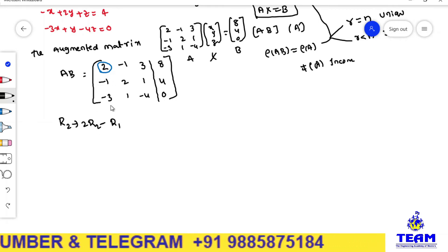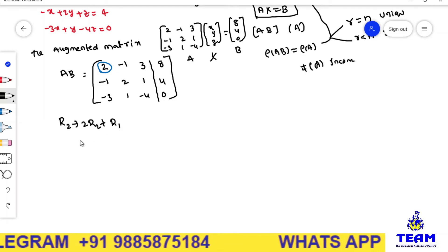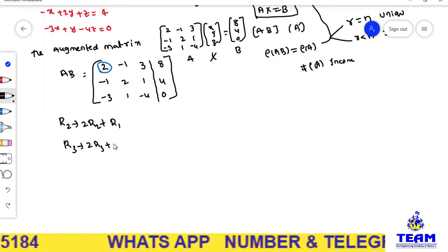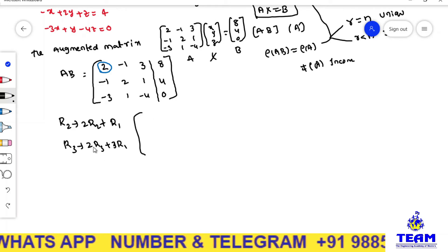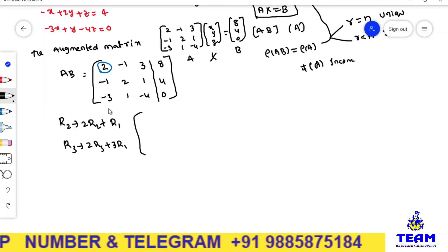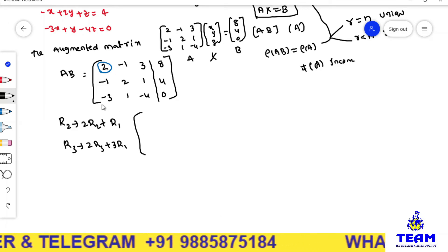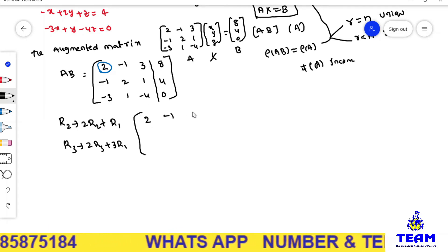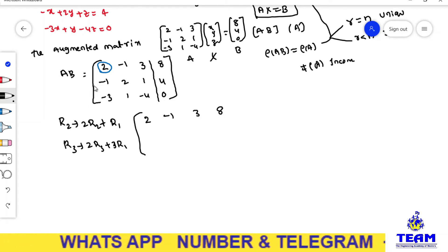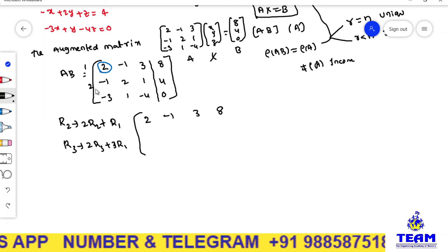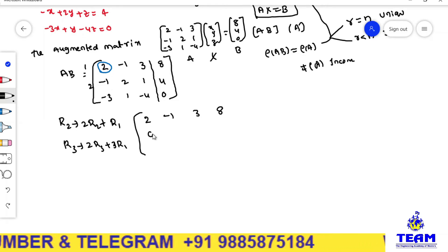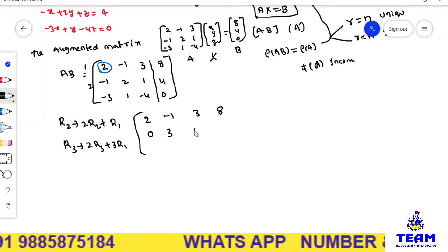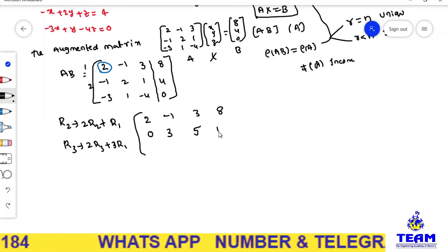Applying R2 → 2R2 + R1: the first row stays as 2, -1, 3, 8. For the second row: 2×(-1) + 2 = 0; 2×2 + (-1) = 3; 2×1 + 3 = 5; 2×4 + 8 = 16. So the second row becomes 0, 3, 5, 16. For R3 → 2R3 + 3R1: 2×(-3) + 3×2 = 0; 2×1 + 3×(-1) = -1; 2×(-4) + 3×3 = 1; 2×0 + 3×8 = 24. So row 3 becomes 0, -1, 1, 24.